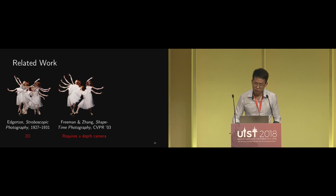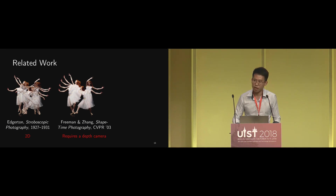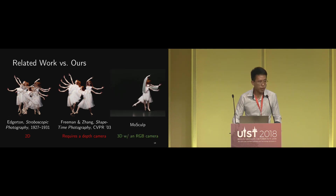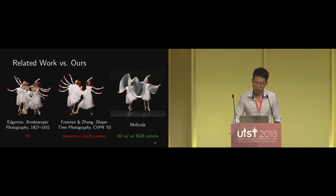To address this issue, shape-time photography was proposed to take depth into consideration by preserving the occlusions between body parts across time. However, it still fails to capture the continuous nature of the motion — for instance, it's unclear how the arm moves throughout the sequence. With Molescope, we can produce 3D visualization of the continuous motion shown here. Our visualization reveals the 3D sinusoidal shape waved out by the ballerina's arm, and we did that with just a regular RGB camera.